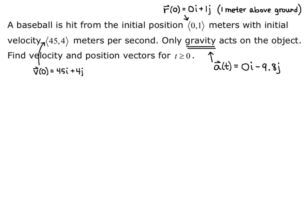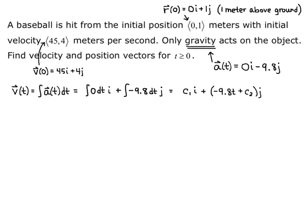We integrate acceleration to get velocity: v(t) equals the integral of a(t) dt, computed component-wise. That is the integral of 0 dt times i, plus the integral of −9.8 dt times j. Integrating 0 gives a constant c1, and integrating the constant −9.8 attaches a t plus another unknown constant, giving c1·i + (−9.8t + c2)·j.